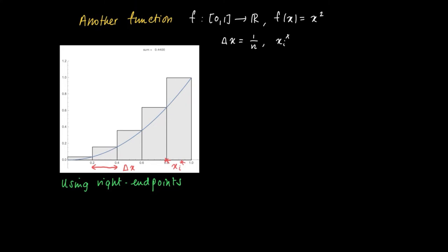So the i-th right endpoint is then given by i times the length of an interval. So i times delta x, or i divided by n.